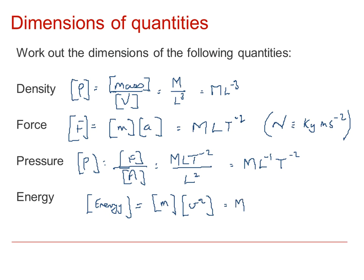That will be mass, and remember we derived velocity earlier as being length T to minus one, so it's that all squared. In total, we've got mass, length squared, and T to minus two.